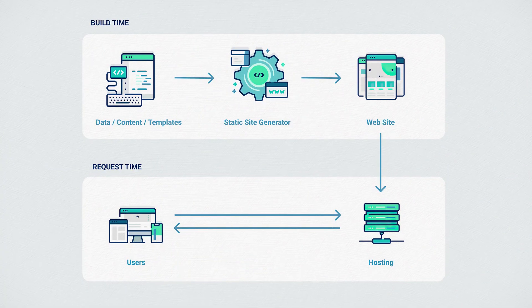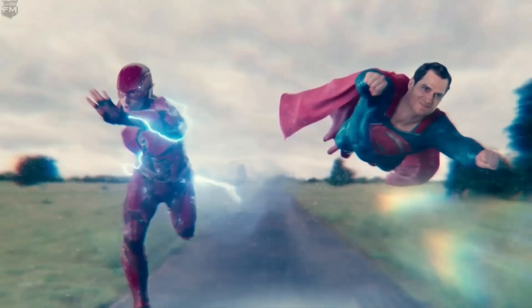Juxtapose that with a static site generator, where files are actually generated at build time. Before the site gets published to the server, a build process runs and generates a bunch of HTML, CSS, and JavaScript files. All those files are packaged up and put on a server, and the server just serves those files. As soon as a URL is hit, that file is served. There's very little processing power. The end result is static sites are usually very, very fast.